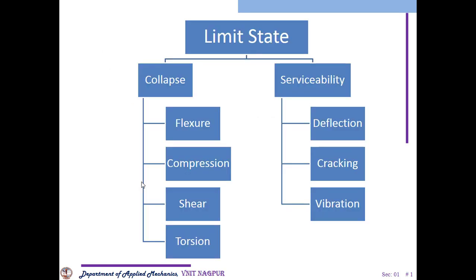The limit state falls under two categories: collapse and serviceability. Collapse includes flexure — that means cracking — compression, which means reduction of volume, shear — cracking — and torsion, which means rotation. So these four things come under collapse. In serviceability, there is deflection, cracking, and vibrations. These things come under serviceability.